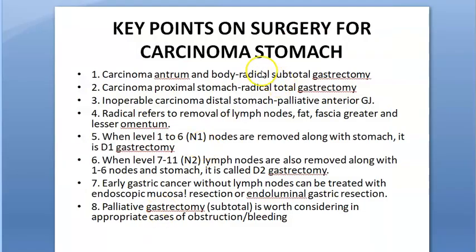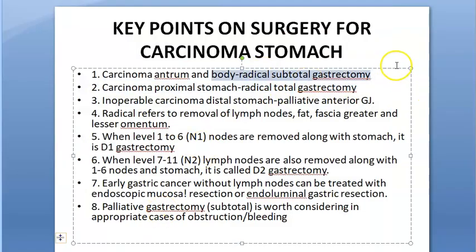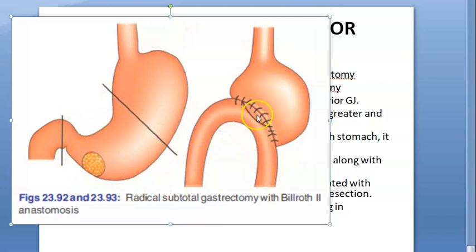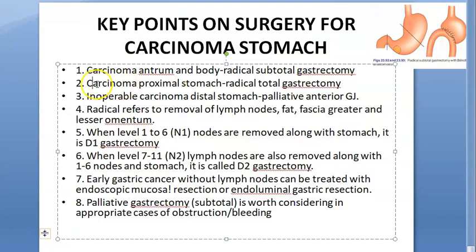Radical subtotal gastrectomy is shown here — the affected part has been removed and stitched directly to the intestine.